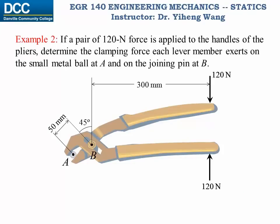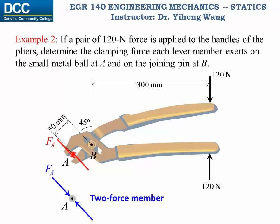Let's look at a simple example involving a pair of pliers. If we exert a pair of 120 N forces on the handles, we need to determine the clamping force each lever member exerts on the metal ball at point A, as well as on the joining pin at point B. The metal ball at point A is a two-force member, so the forces acting on it must be a pair with the same magnitude, same line of action, and opposite direction. If we treat the entire pliers as one system, we cannot solve for force FA, nor for the forces at pin B because they are internal to the system. So we must analyze only one member.